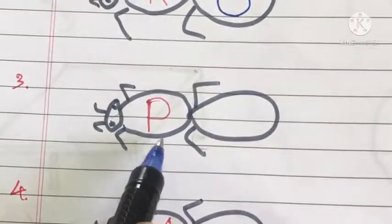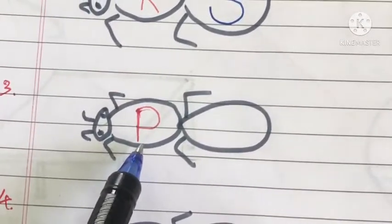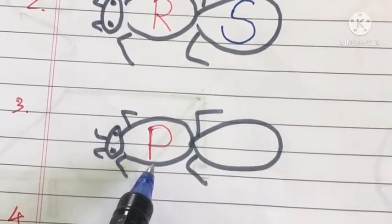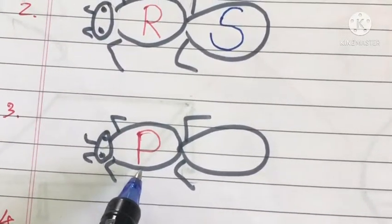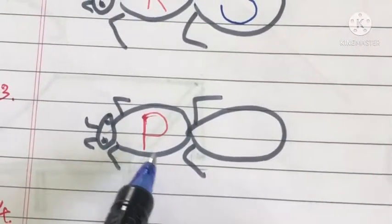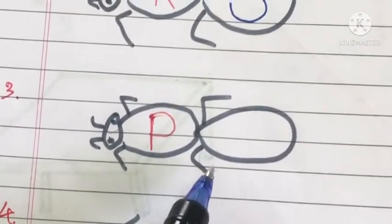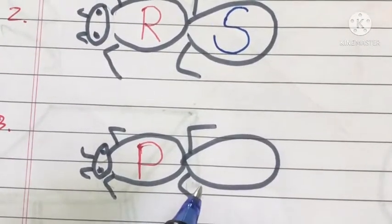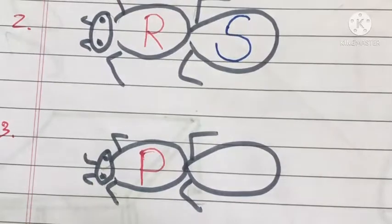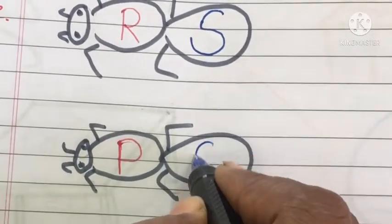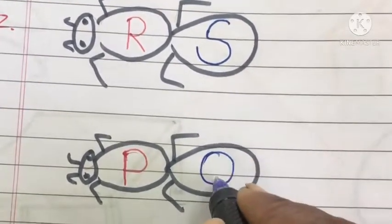See here. What is this letter? It is the letter P. What is the next letter for P? It is Q. Write the letter Q.